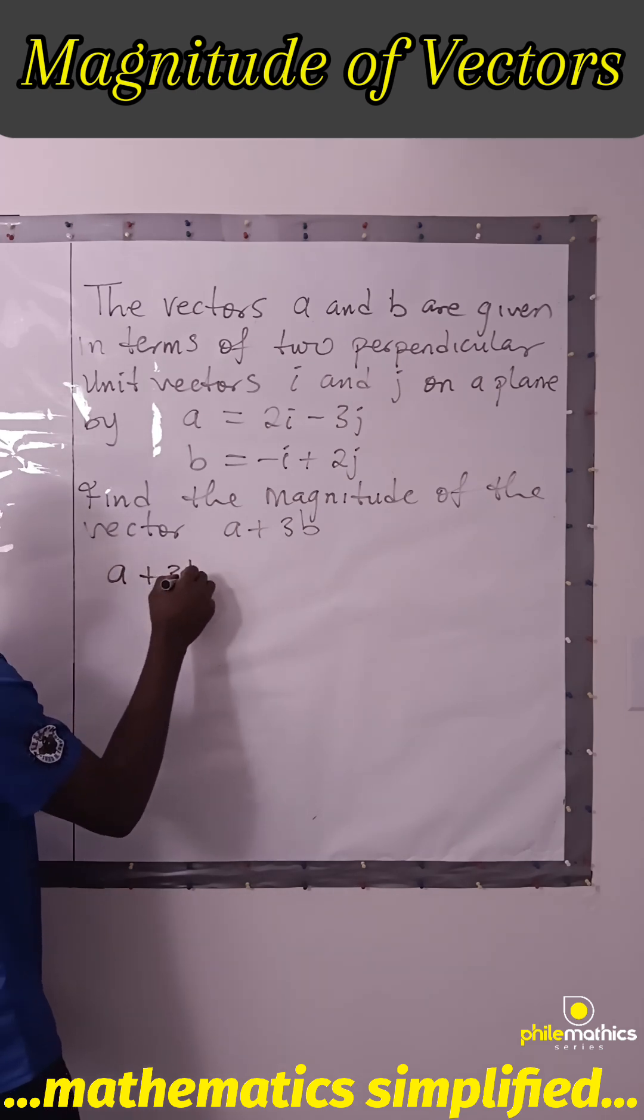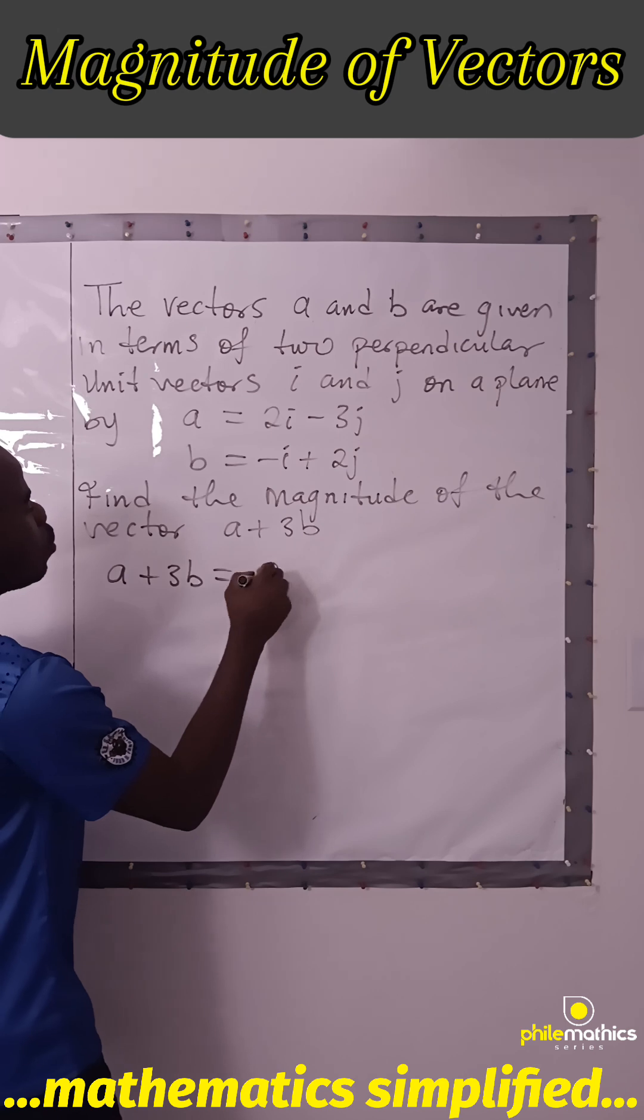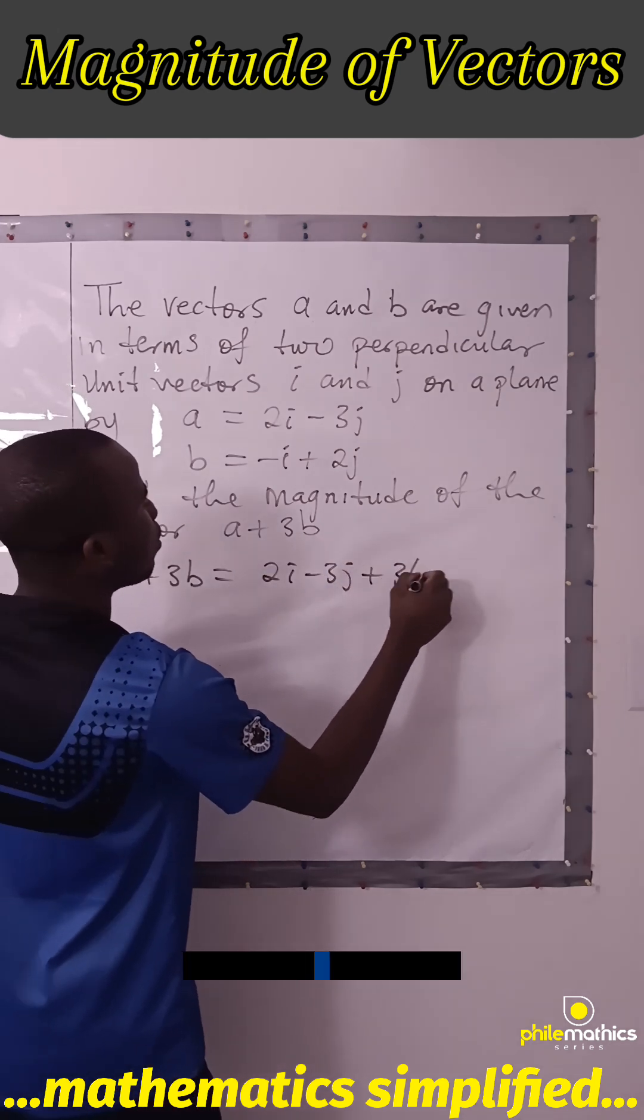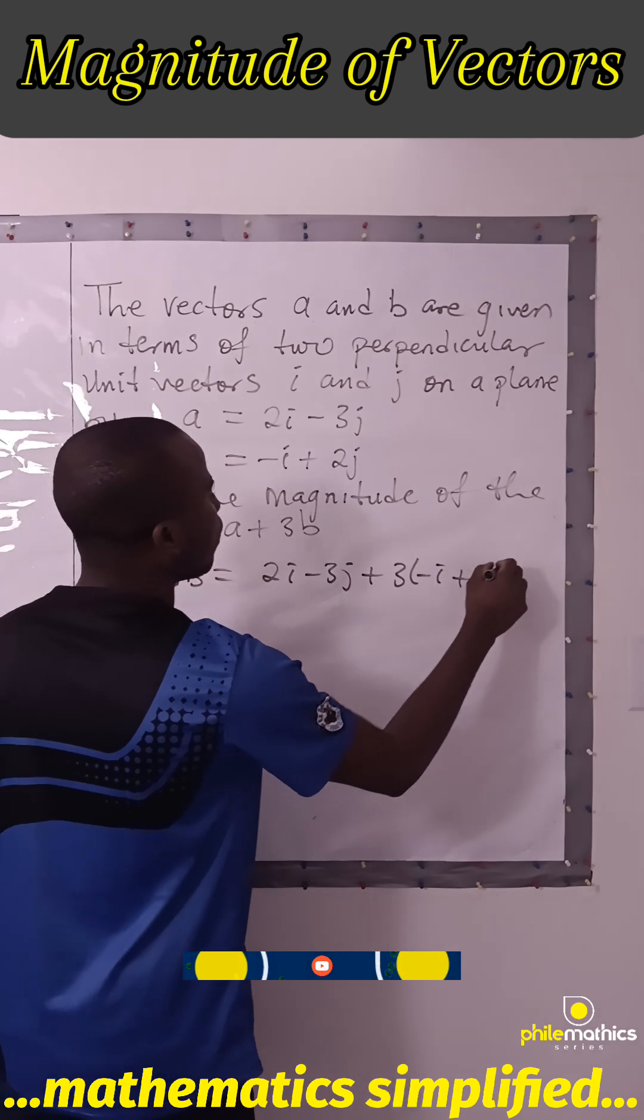A plus 3B will be A is 2I minus 3J and 3B will be plus 3 times negative I plus 2J.